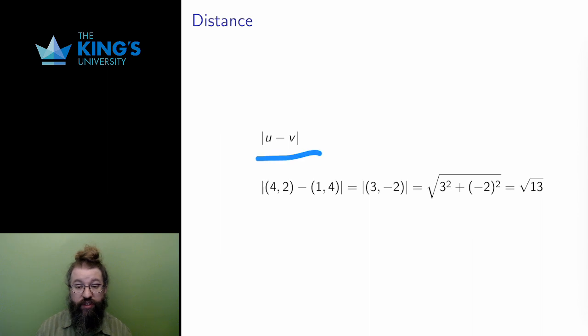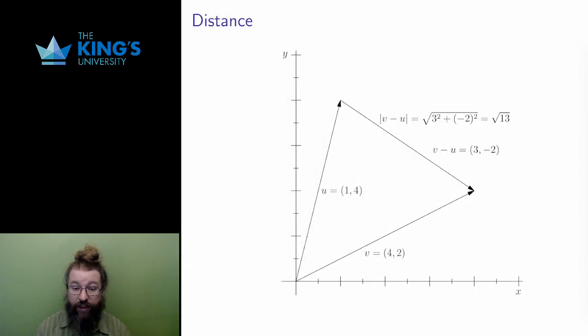The distance between two vectors is the length of their difference. For example, in the diagram, the distance between the vectors (1,4) and (4,2) is square root 13 units of distance. This is calculated by subtracting the vectors, taking the square of the terms of the subtraction, adding those together, and then taking the square root of all of that.